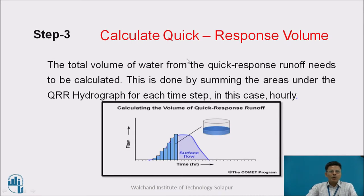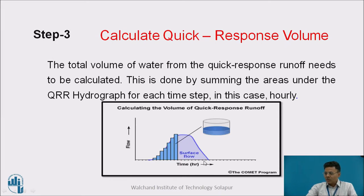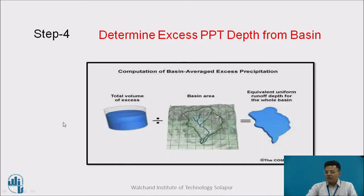Step 3 is to calculate the quick response volume. The total volume of water from quick response runoff needs to be calculated. This is done by summing the areas under the QRR hydrograph for each time step — in this case, an hourly time step. The surface flow has come over a specific period of time, so we need to convert it into a certain depth.